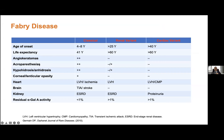In classical Fabry disease, we have angiokeratoma, acroparesthesias, hypohydrosis or anhidrosis, a specific corneal formation named cornea verticillata, left ventricular hypertrophy, stroke, and end-stage renal disease. The residual enzyme activity is less than 1% in those cases, and the determinant of this residual enzyme activity is, of course, the mutation in the GLA gene.